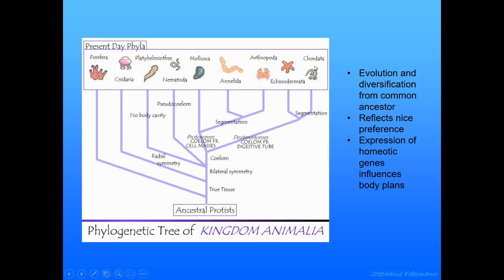We're going to run the whole gamut — we're going to look at pictures of porifera, see an example of a cnidarian, an adorable platyhelminthes, nematodes, mollusks, an annelid, arthropods, echinodermata, and then the chordata, which is us.